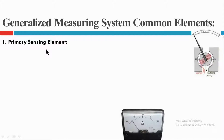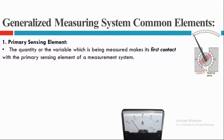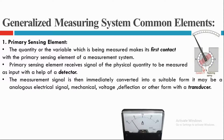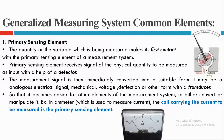The first one is the primary sensing element. The quantity being measured makes its first contact with the primary sensing element. Here the coil is the primary sensing element and the quantity being measured is current. It receives the signal of the physical quantity as input with the help of a detector, and then the signal is immediately converted into a suitable form — an analog electrical signal, mechanical movement, voltage, deflection, or some other form — with the help of a transducer, so that it becomes easier for other elements of the measurement system to convert or manipulate it. In an ammeter, the coil carrying the current to be measured is the primary sensing element.